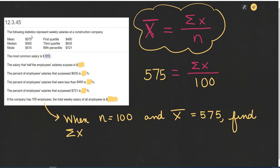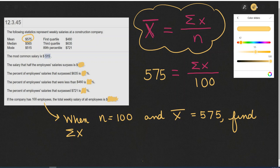X-bar is equal to the sum of all the salaries divided by the number of employees. Or in other words, 575, which is given as X-bar, or the mean, is equal to the sum of all the salaries divided by the 100 employees.